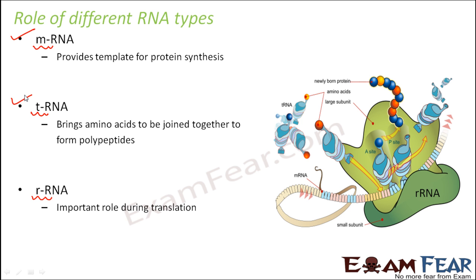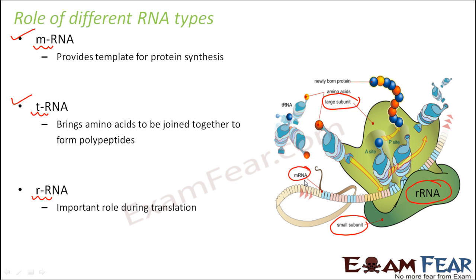Now when you talk about ribosomes, ribosomes have two major subunits. Here you can see the ribosome: this is the smaller subunit of ribosome — this dark green structure — and this is the larger subunit of ribosome, the light green structure. On these ribosomes you have the rRNA. The mRNA is this one which brings about the sequence and is being created as part of transcription. And tRNA is this one which is going to carry the amino acid so that the amino acids can be sequenced together to form the proteins.